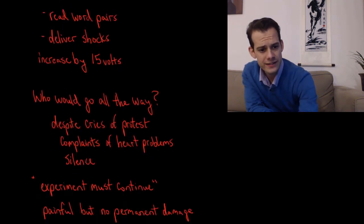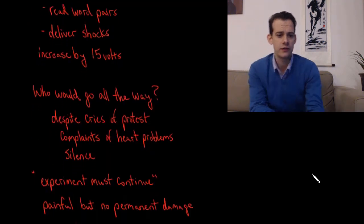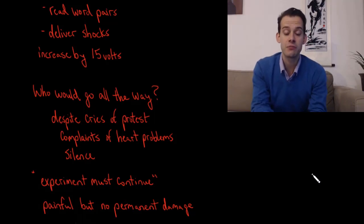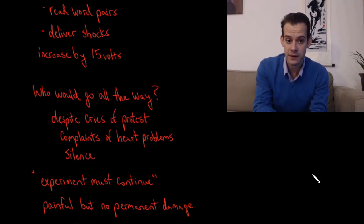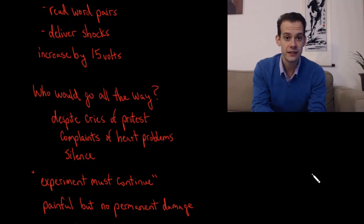So Milgram wanted to know who would deliver these shocks to the learner despite his cries of protest as the shocks got stronger and stronger. And then he would begin to complain that his heart was bothering him and that he wanted to end the experiment. And then eventually the teacher would just hear silence and the learner would stop responding to the word pairs and stop responding even to the delivery of the electric shocks.